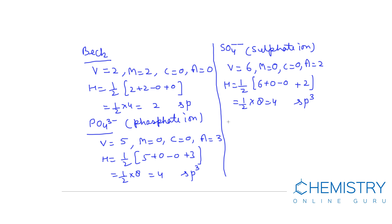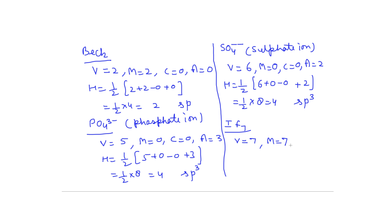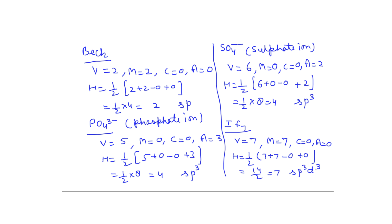Another example is IF₇. The number of valence electrons in iodine is 7, so V equals 7. Fluorine is monovalent and 7 F atoms are attached to I, so M equals 7. C equals 0 and A equals 0. H equals one-half times (7 plus 7 minus 0 plus 0) equals 14 divided by 2, which equals 7. When H equals 7, hybridization is sp3d3.